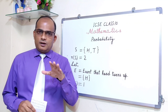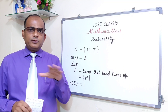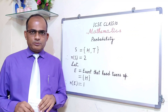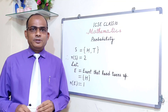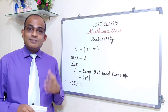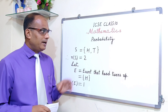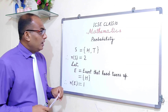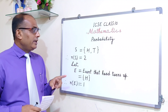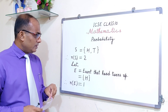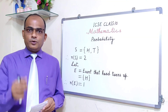In Part 1 I have explained all the important points and the definition of probability — like experiment, random experiment, event, sample space, sample points — everything explained in Part 1. Today we are going to solve questions based on tossing a coin.